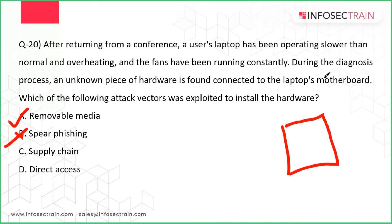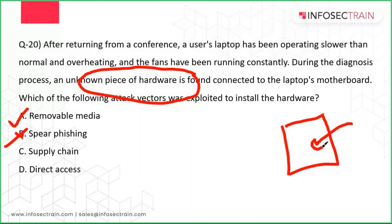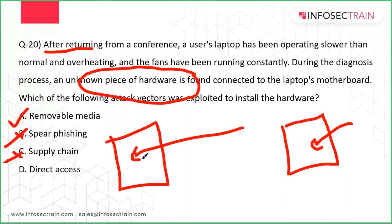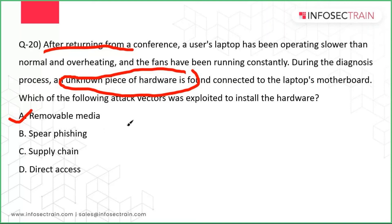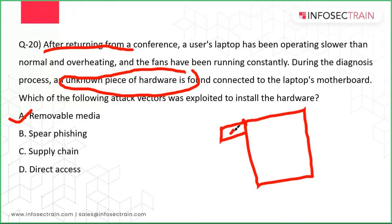Supply chain attack means the hardware came compromised from the manufacturer — it would already be attached when purchased, not added later. Direct access means the attacker physically accessed the laptop, but the key context here is the person returned from a conference. The most likely answer is removable media — someone at the conference inserted a pen drive or similar device containing malware connected to the laptop motherboard.